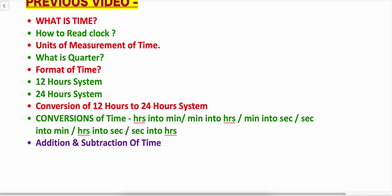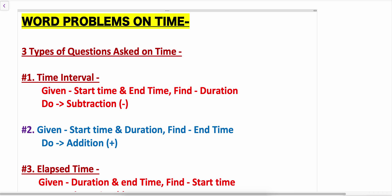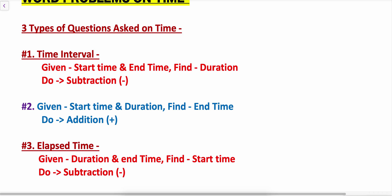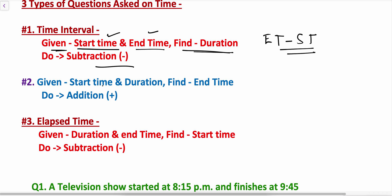Today's video is all about word problems on time. In exams, three types of questions are asked on time. The first type gives the start time and the end time, and we need to find the duration — for example, how long a movie lasts or how long a meeting was held. To find the time duration, we subtract: end time minus start time.